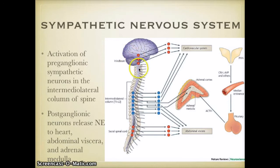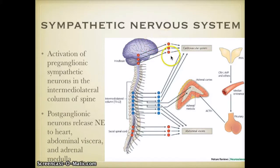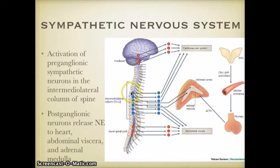In this illustration, these red circles are representative of parasympathetic neurons. These neurons here are called preganglionic parasympathetic neurons, and these neurons here are called postganglionic parasympathetic neurons. These blue neurons here are representative of your sympathetic neurons — these ones are representative of preganglionic sympathetic neurons and these ones are representative of postganglionic sympathetic neurons.